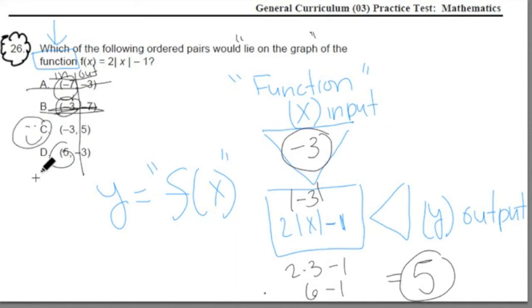Now if we just wanted to finish it off and do D, and we inputted the 5 for D, we'd do the absolute value of 5 is 5 times 2 is 10. Agreed? 10 minus 1 is 9. That doesn't match up with the 3. So team,